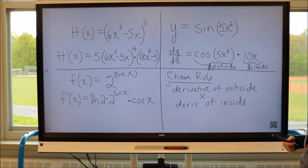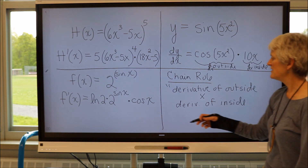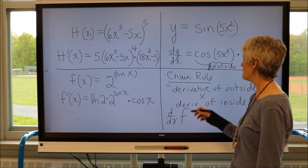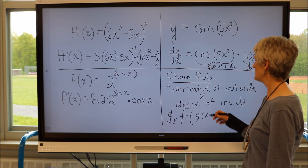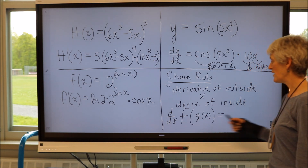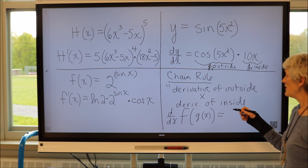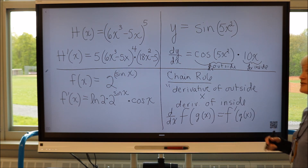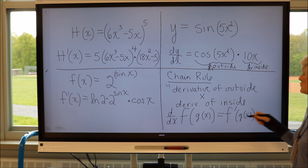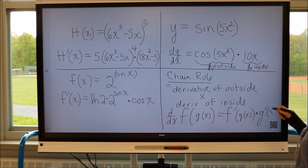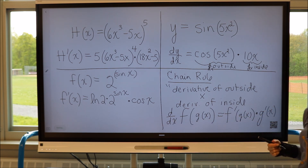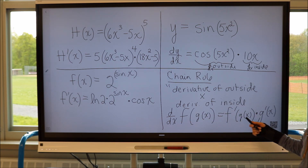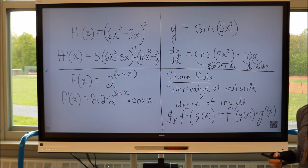The derivative of the outside times the derivative of the inside. Now, the fancy notation — if I'm taking the derivative of a composition, so f of g of x, the derivative of the outside function is going to be f prime of g of x. That's the derivative of the outside function times the derivative of the inside function, denoted by g prime of x. So there is my chain rule. The derivative of a composition is the derivative of the outside, f prime of g of x, times the derivative of the inside, g prime of x. All right, have fun.